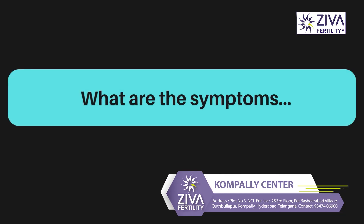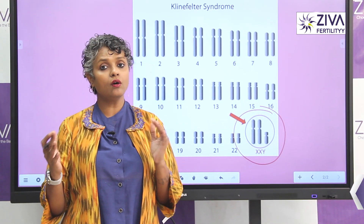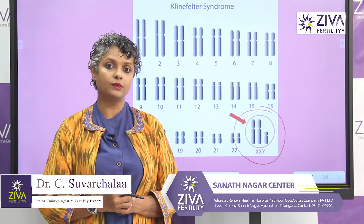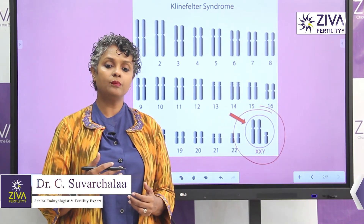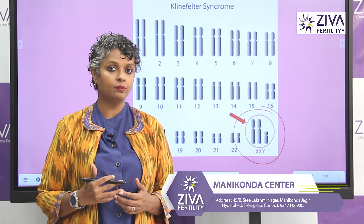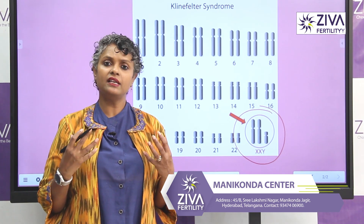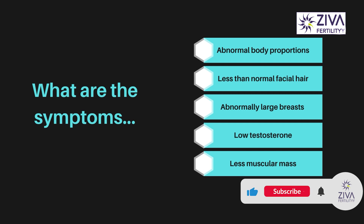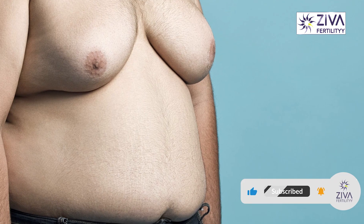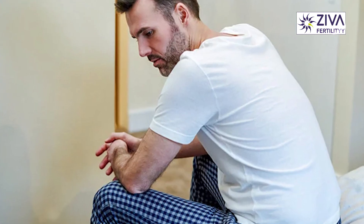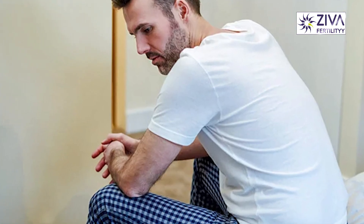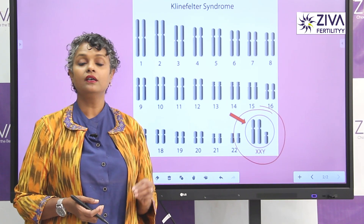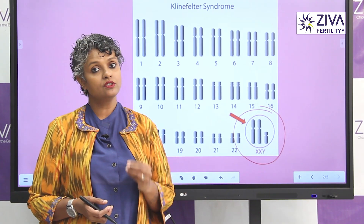What are the symptoms? If it is a mild or pure case of XXY, the symptoms vary. The person comes across as a very tall person. There is less facial hair or body hair. There are cases where breast development may also happen. There is low testosterone and less muscle mass. The issue becomes apparent when they are trying for children.